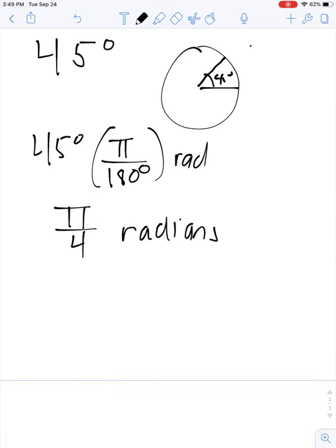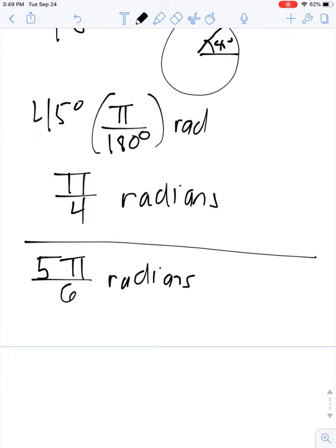On the other hand, suppose I start with an angle of 5π over 6 radians. What is this in degrees?